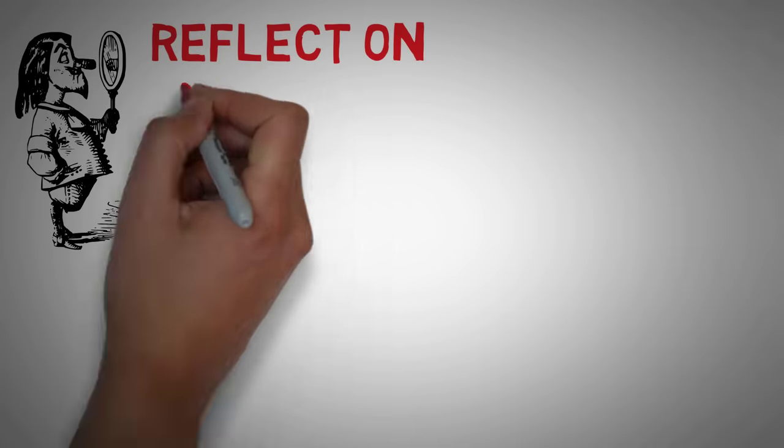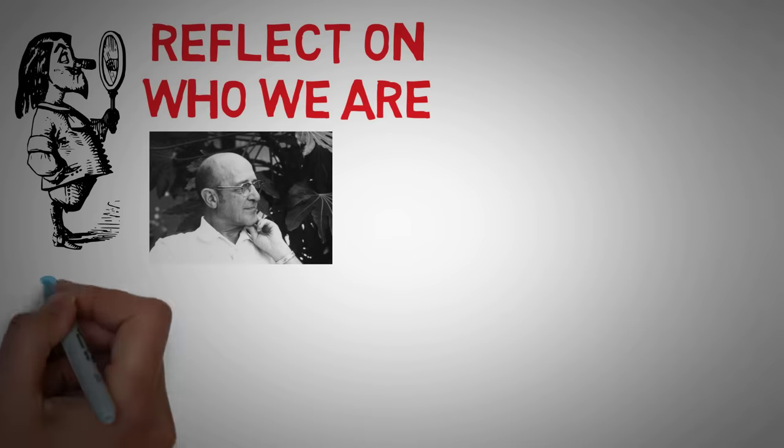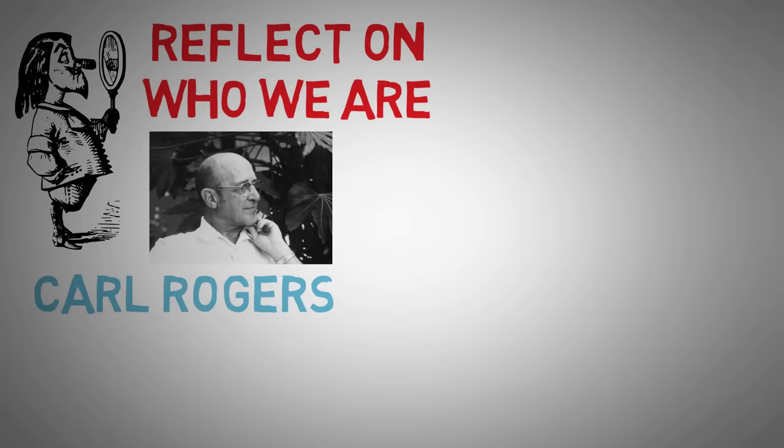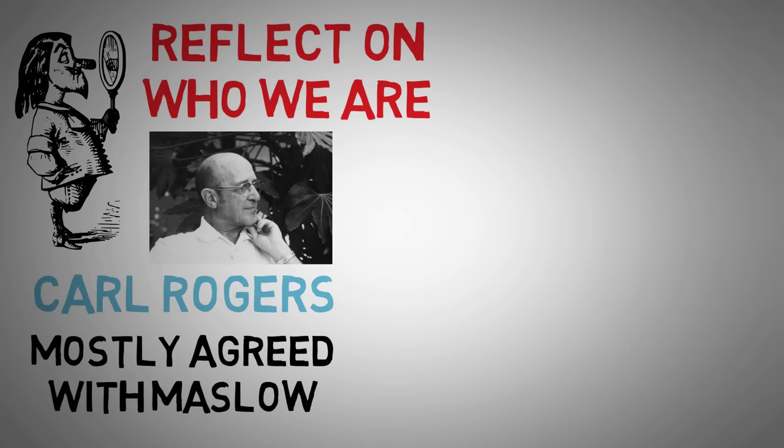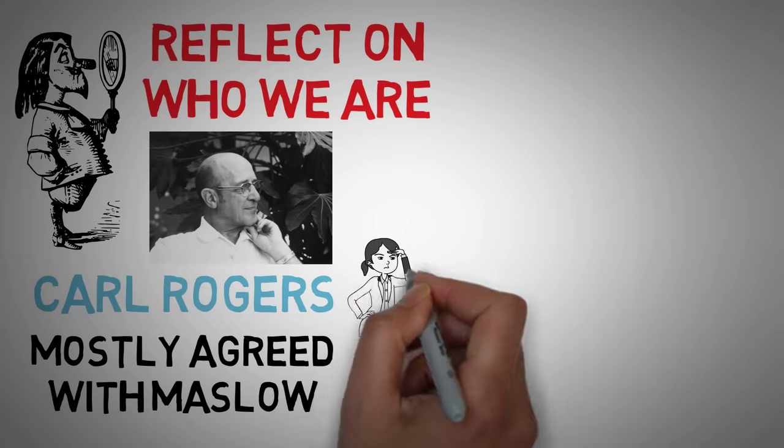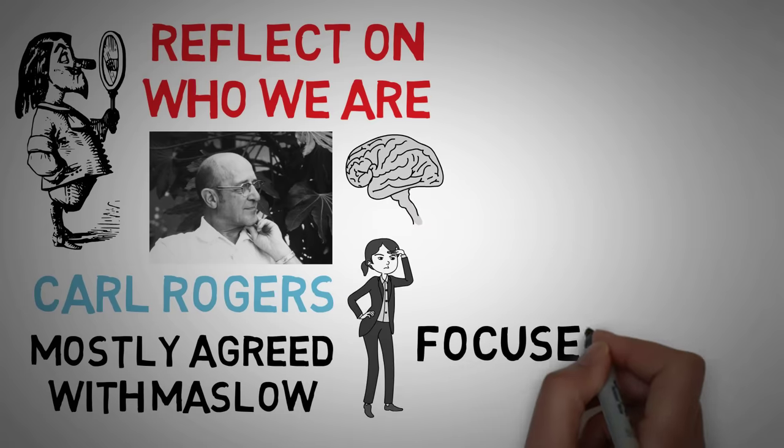In order to work towards self-actualization, humans have to reflect on who they currently are and what they need to do or to change in order to move forward. Carl Rogers was a humanist psychologist who focused on this process. He, for the most part, agreed with Maslow's theories, but he pushed further to study how people actually satisfy these complex needs. What do you actually do? What thought processes are happening? Maslow focused on what, and Carl Rogers focused on how.